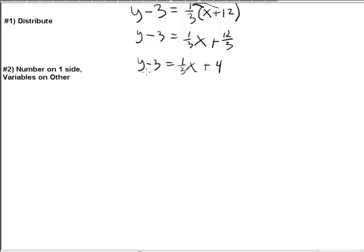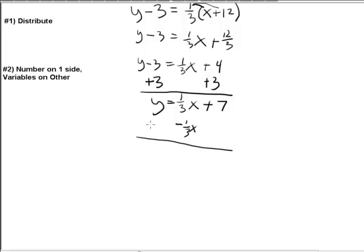So let's stay consistent, and I'll take the number 3 and take it to the right side. So we end up with y equals 1 third x plus 7. Now, let's bring the x term to the left side by subtracting 1 third x from both sides. So we end up with y minus 1 third x equals 7.